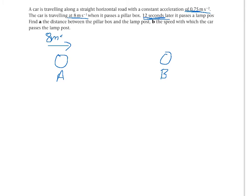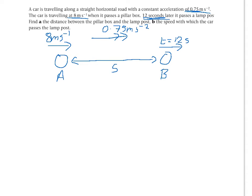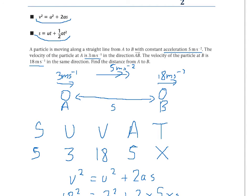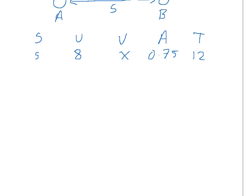The initial speed is 8 metres per second, the acceleration is 0.75 metres per second squared, and the time is 12 seconds. We don't know the final velocity, but we're trying to find the distance S. Writing down SUVAT: time is 12, acceleration is 0.75, final velocity is unknown, initial velocity is 8, and we're finding S. We need an equation without V. Looking at our two equations, the second one — S equals UT plus half AT squared — doesn't contain V, so we'll use that one.